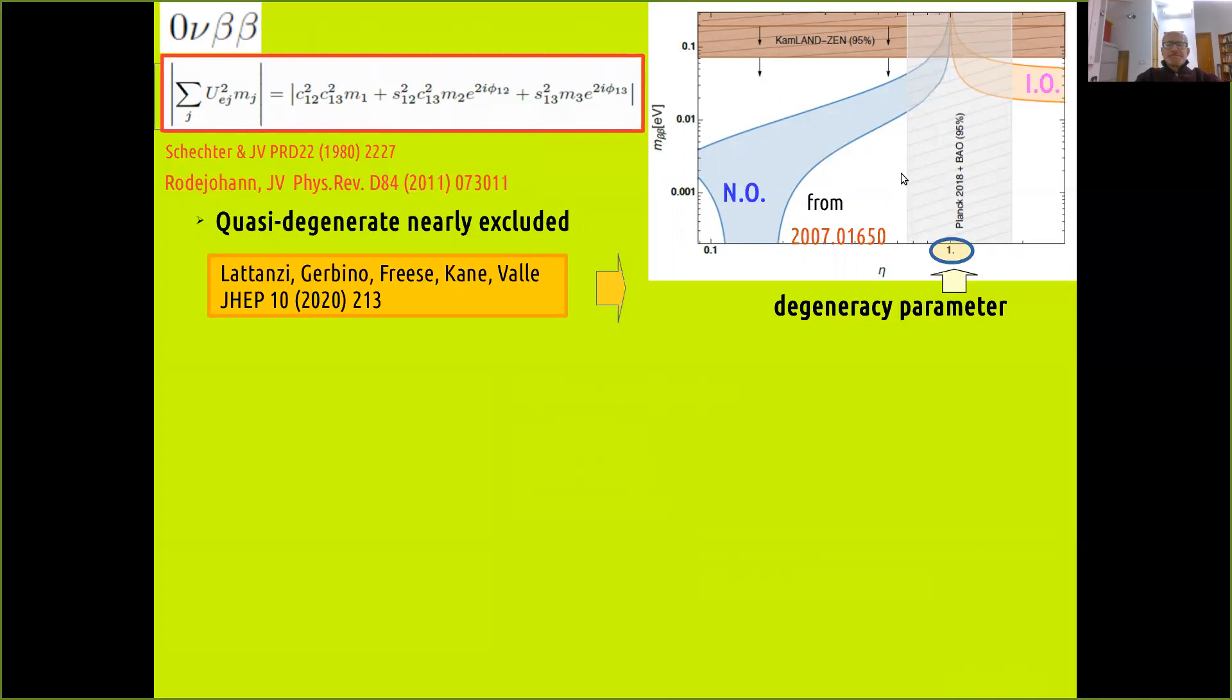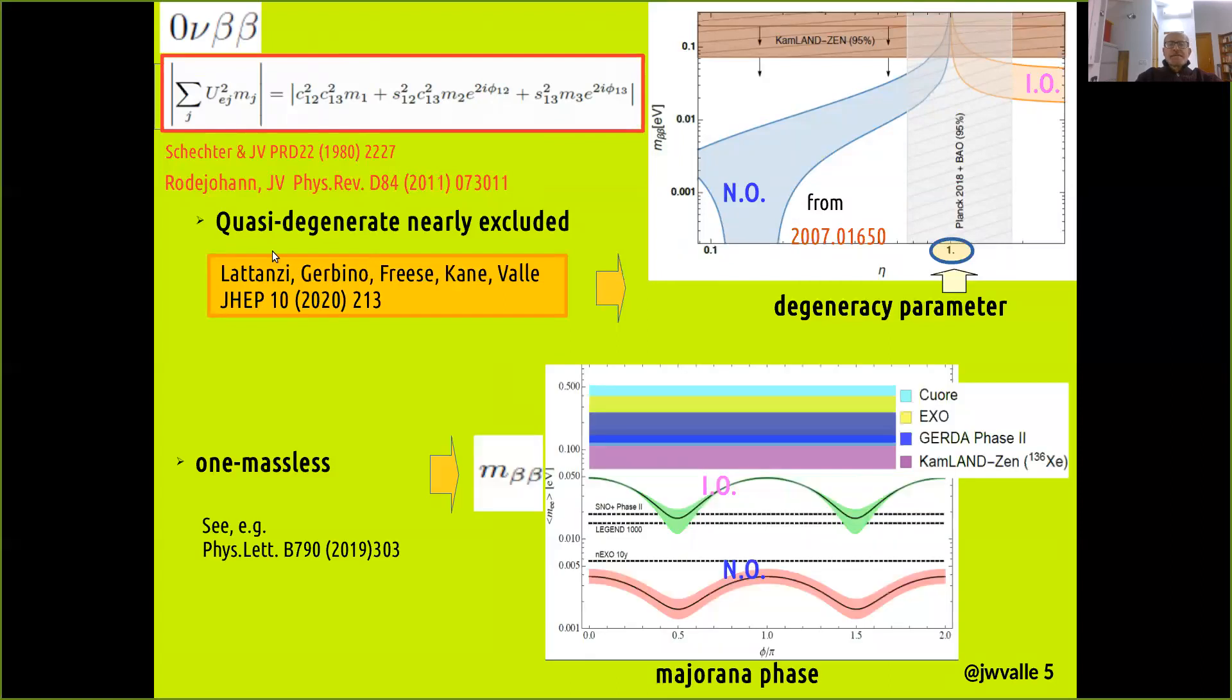So the next best bet consists in having one of the three neutrinos massless or nearly so, because in this case there cannot be any cancellation amongst these three terms. And one finds that even for normal ordering here there is a lower bound. Unfortunately it lies lower than experimental reach, foreseeable experimental reach in the next generation of double beta searches.